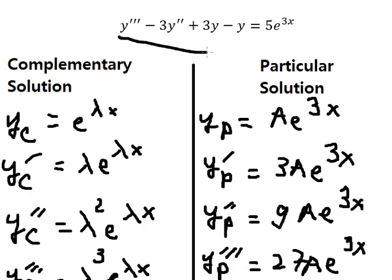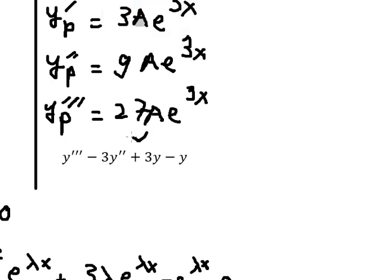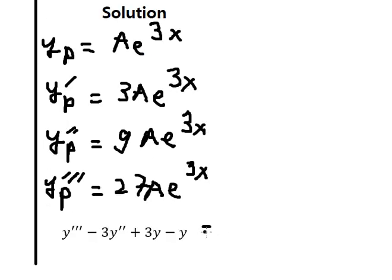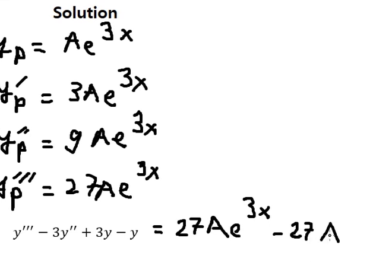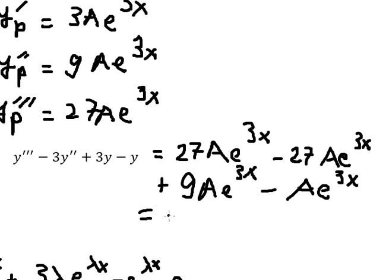We substitute each derivative into the equation: 27A e^(3x) minus 3 times 9A e^(3x), which gives negative 27A e^(3x), plus 3 times 3A e^(3x), which gives 9A e^(3x), minus A e^(3x). Simplifying, we get 8A e^(3x).